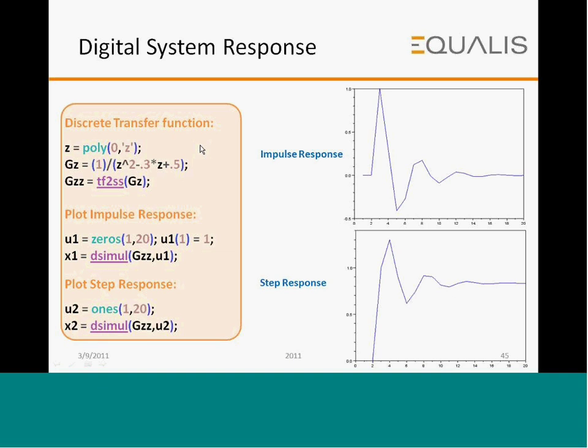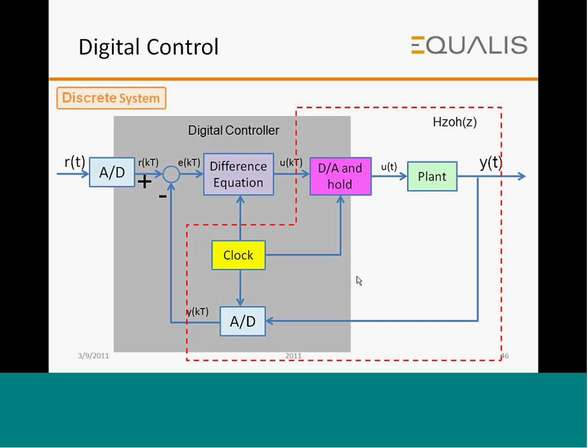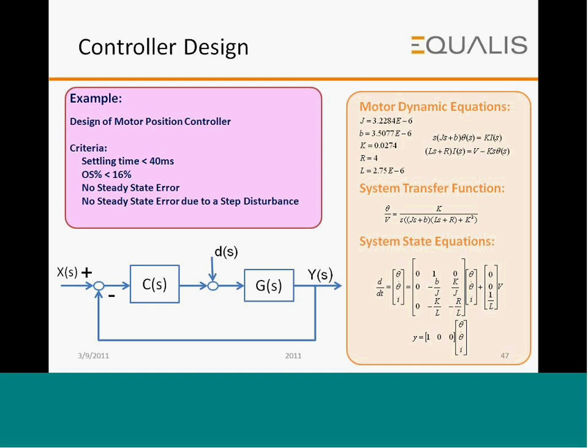Digital system response includes the discrete transfer function, plots of impulse and step response. For digital control and discrete system modeling, you define A-to-D and D-to-A converters, set the clock, and model difference equations. In the motor position controller design, the control system has the plant G(s), sensor output Y(s), the process parameter to be controlled X(s), and disturbance D(s). The plant here is a motor and X represents position, Y is the sensor reading, and C is the controller.